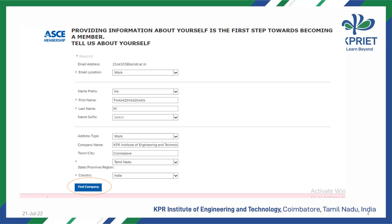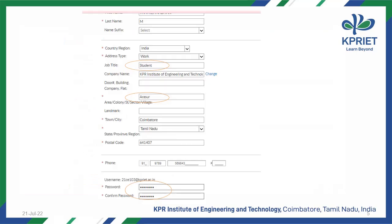Then select Find Company. You have to enter job title as Student, area, pin code 641407, and your mobile number.